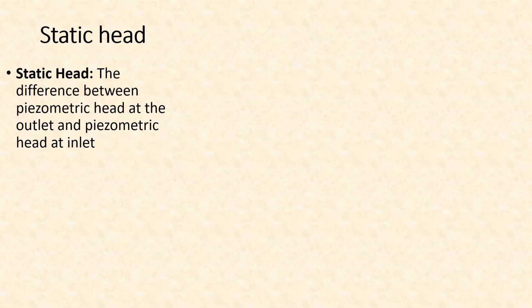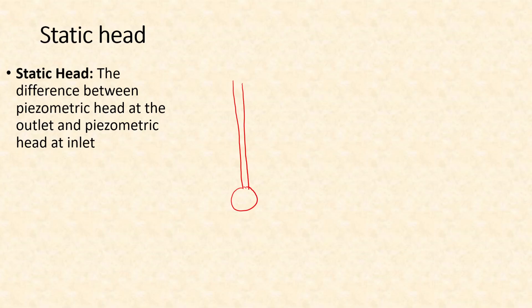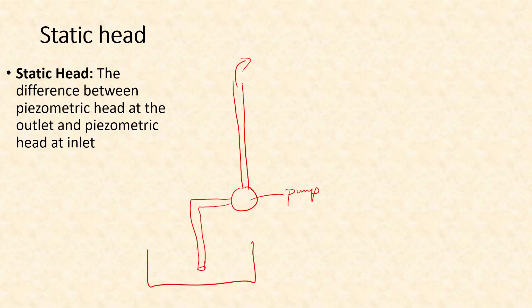The static head is defined as simply the difference between piezometric head at the outlet and piezometric head at the inlet. Let's try to understand this with a simple schematic diagram of a pump system. Suppose this is our pump, and it is going to deliver water through this pipe, drawing water from a supply tank.